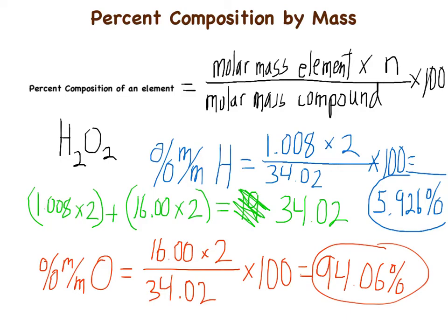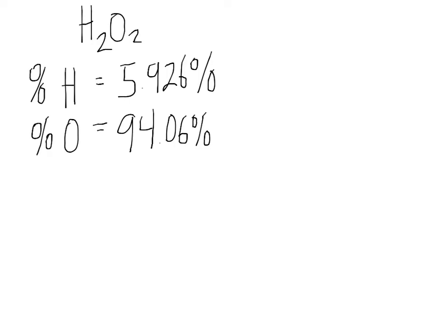Here are the answers for hydrogen peroxide: percent by mass of hydrogen is 5.926% and percent by mass of oxygen is 94.06%. We have two hydrogens and two oxygens, so you might expect 50/50. But hydrogen only takes up about 6% of the mass while oxygen takes up over 90%.